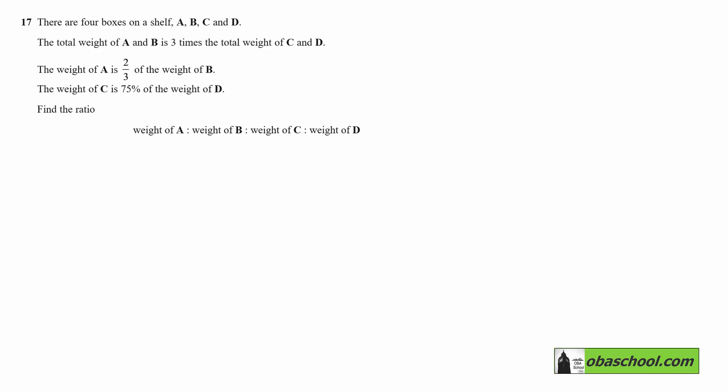There are four boxes on a shelf: A, B, C, and D. The total weight of A and B is three times the total weight of C and D, and we'll return to that fact shortly.